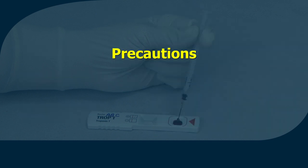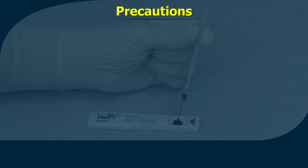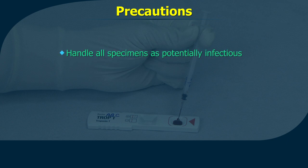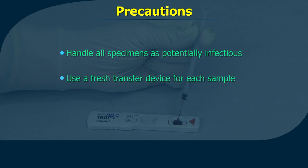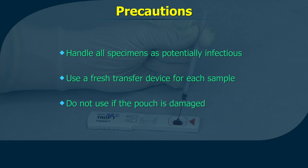Precautions: Handle all specimens as potentially infectious. Proper handling and disposal methods should be established. To avoid cross-contamination, use a fresh transfer device for each sample tested. Do not use the test kit if the pouch is damaged or improperly sealed.